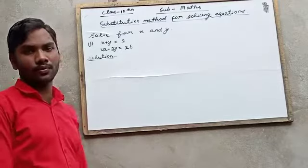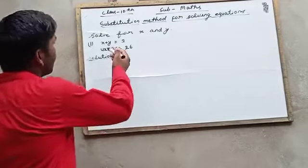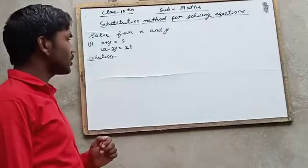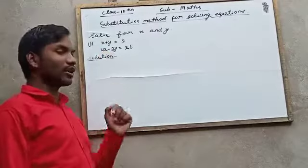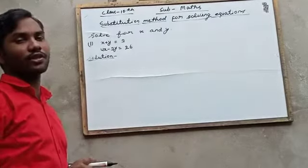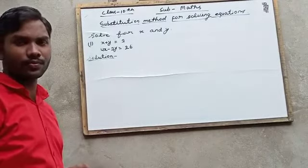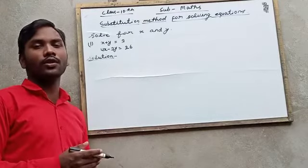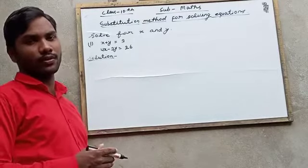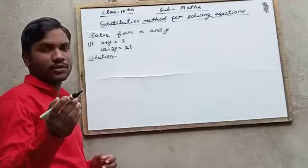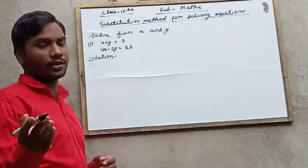Here I have taken one example. There are two equations: first equation is x plus y is equal to 3, and second equation is 4x minus 3y is equal to 26. For this equation we will find out the value of x and y. So now I will solve it, just watch carefully and understand it.